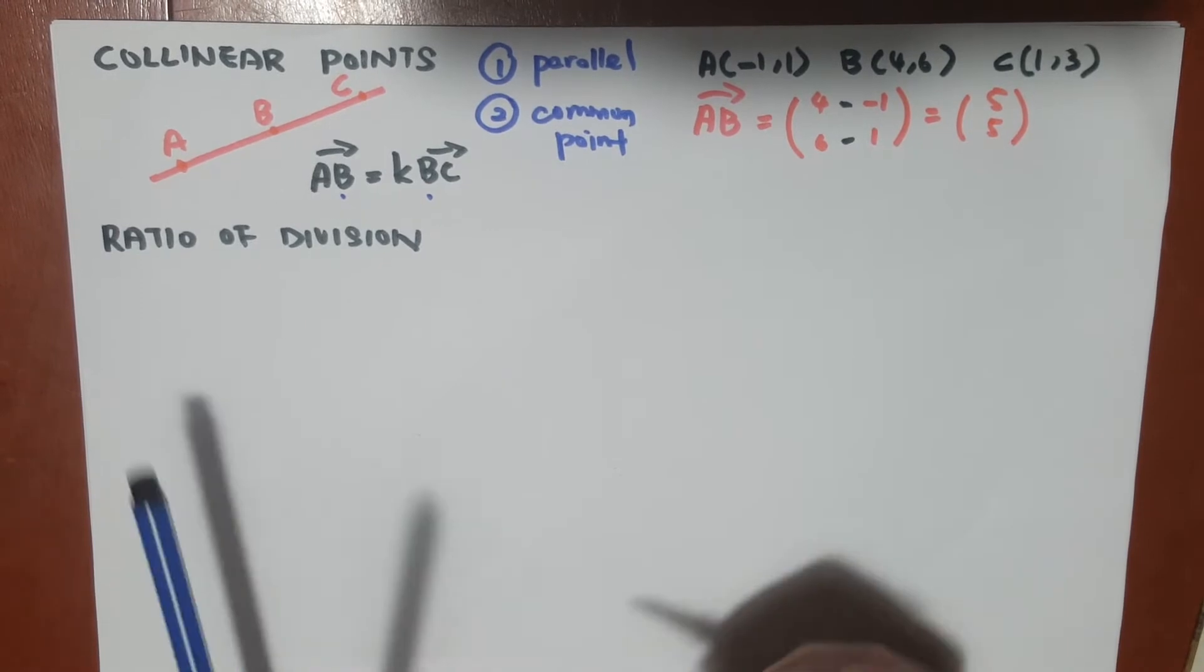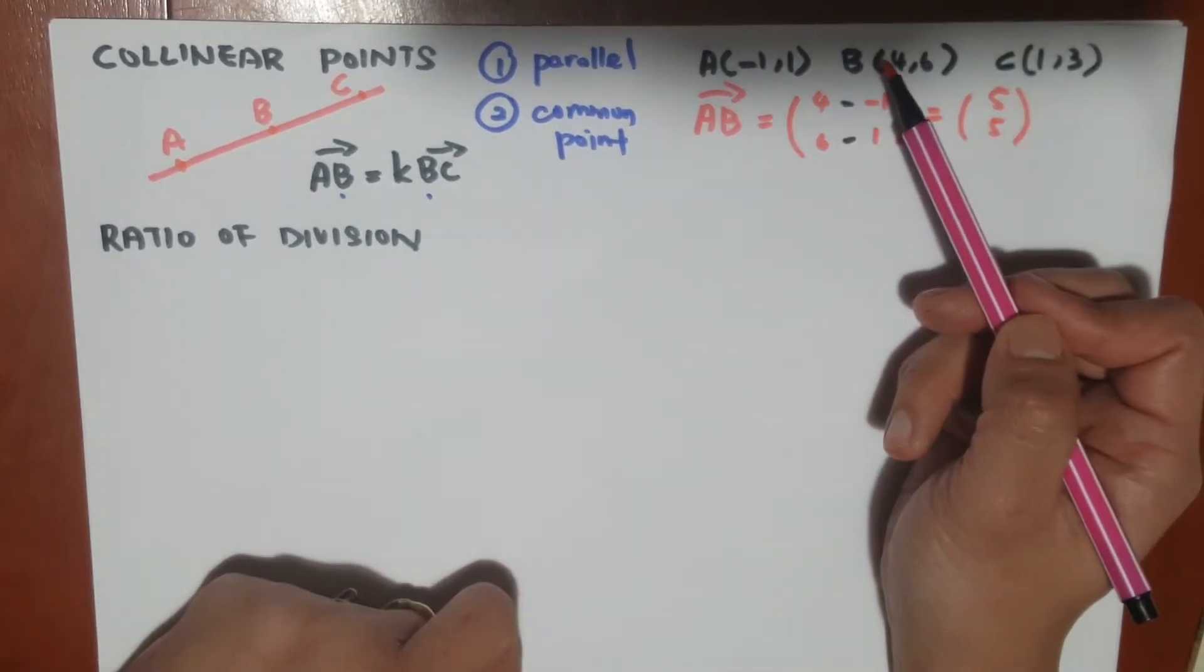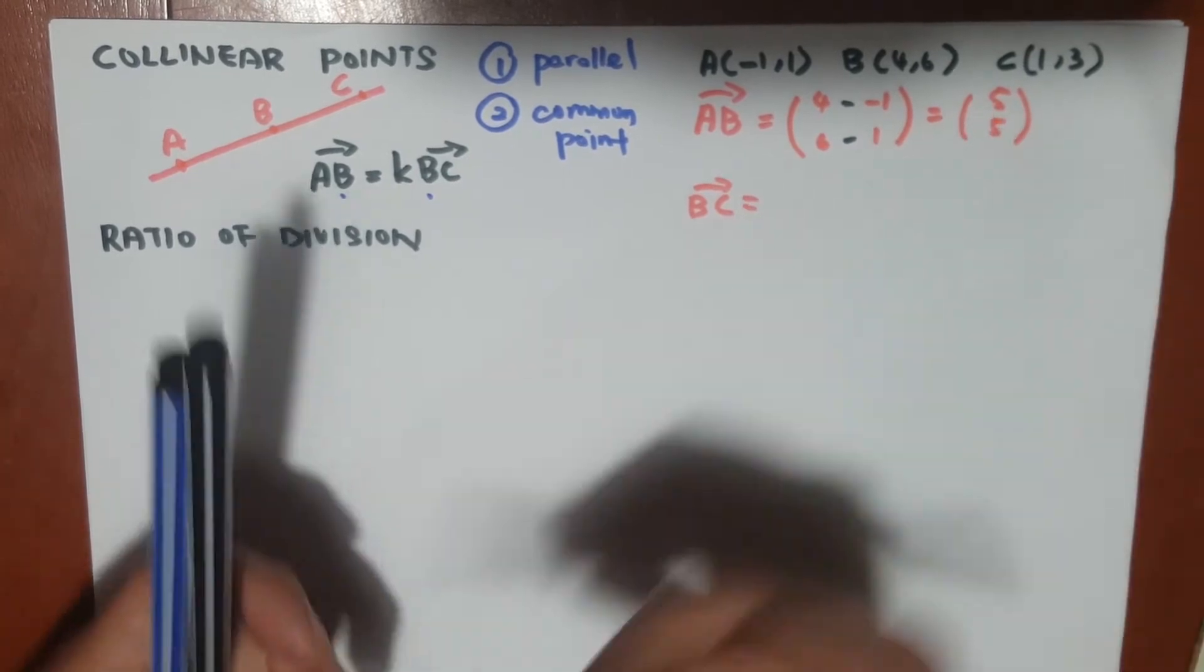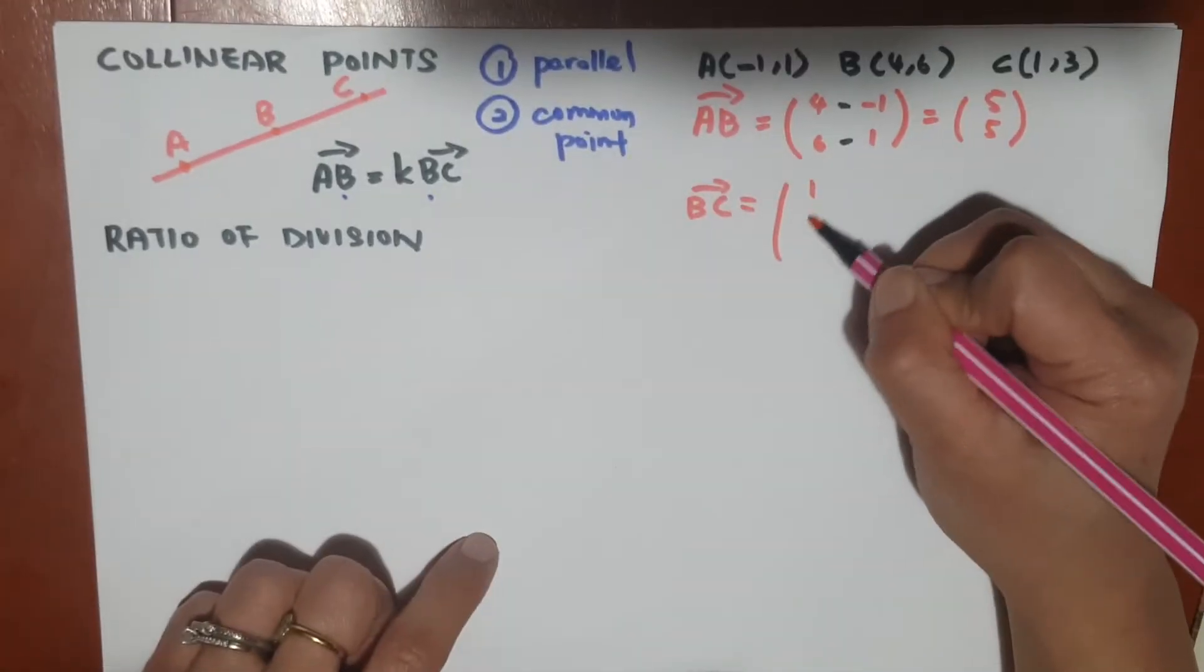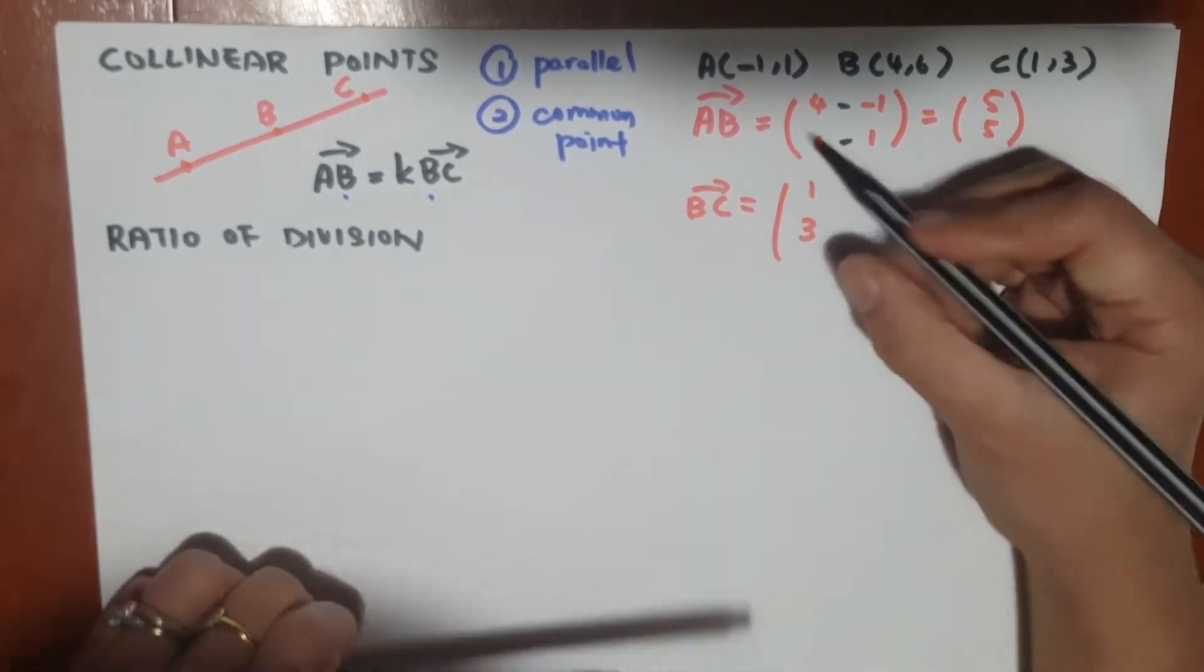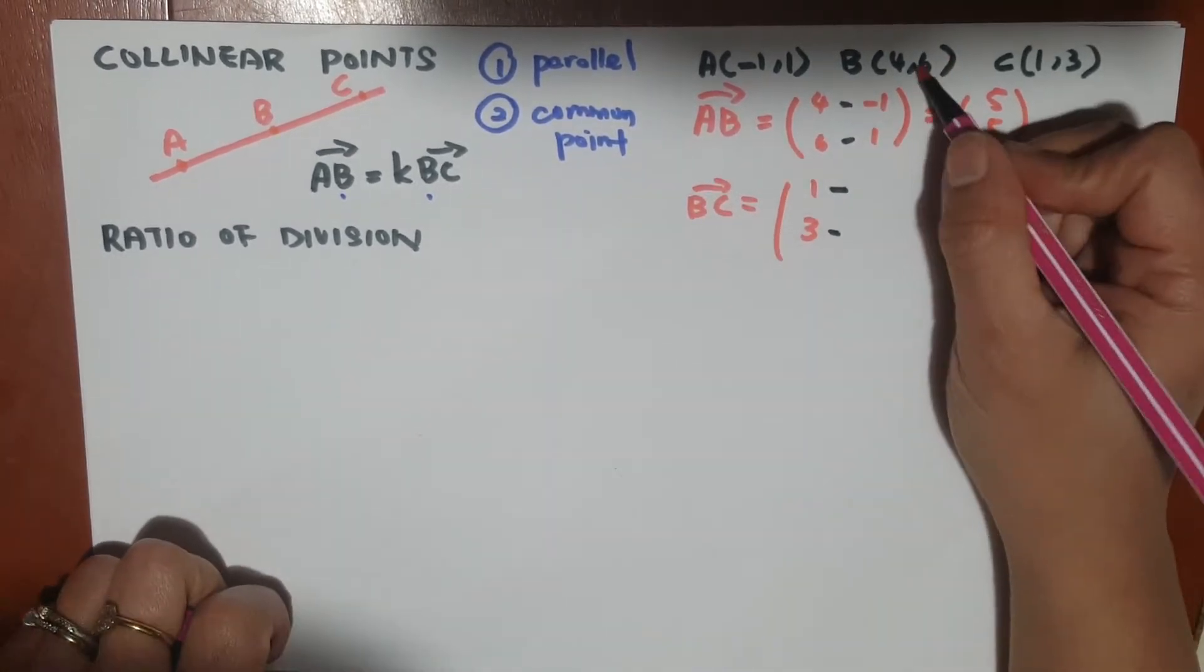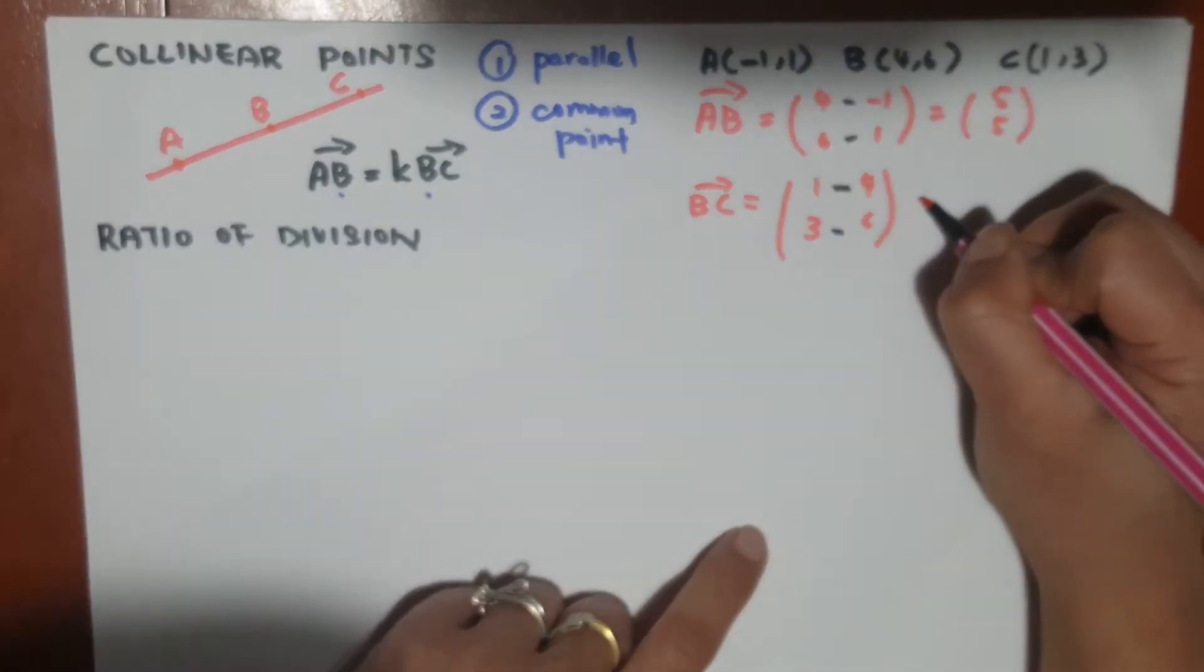And we can pick another set, maybe vector BC. Vector BC will be, we take C first, so it's (1, 3), and we take, the negative is part of the formula, and because this is B, we have to take (4, 6), and simplify it. We will get (-3, -3).